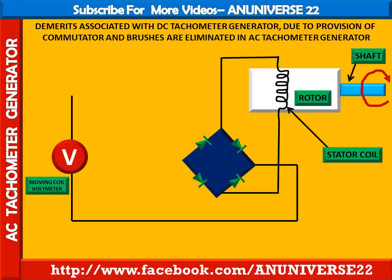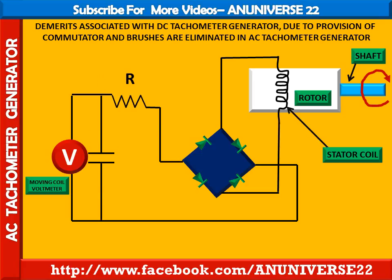Here there is a variable resistance R, and another component is the capacitor filter C. With the help of the capacitor filter, the ripple content of the rectified voltage is smoothened.